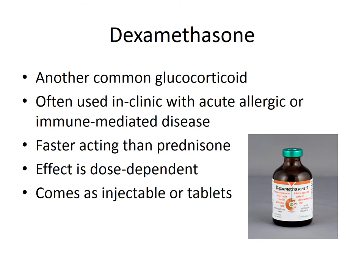Dexamethasone is a very common glucocorticoid used often in clinic with acute allergic or immune-mediated disease — for example, if an animal is crashing with Addison's disease or IMHA, we start them right away on dexamethasone. It's also used for allergic reactions like vaccine reactions. It acts more quickly than prednisone and lasts longer. The effect is dose-dependent with a wide range of doses. It comes as an injectable and as tablets, though we usually prefer prednisone or prednisolone orally.